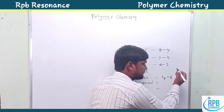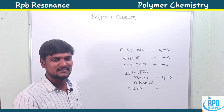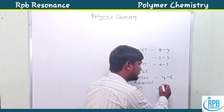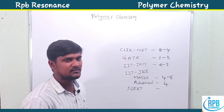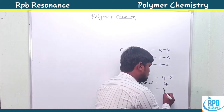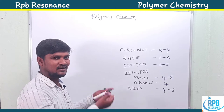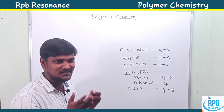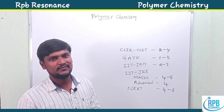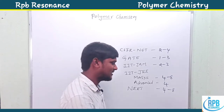For JEE Advanced, one question is guaranteed — four marks — and another interlinked question is also there, so four to eight marks total. This is the weightage of this simple yet important topic, polymer chemistry. Now I'll upload a series of videos on polymer chemistry. Let's move on to the topic.